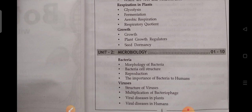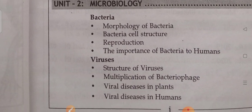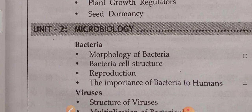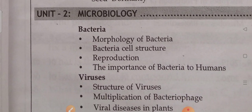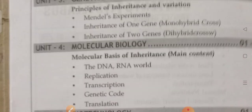Next, moving to the second unit — Microbiology: Bacteria and Viruses. Note that microbiology related to human beings is different; here we are focusing only on plants — bacterial and viral diseases in plants. Next, coming to the third unit.